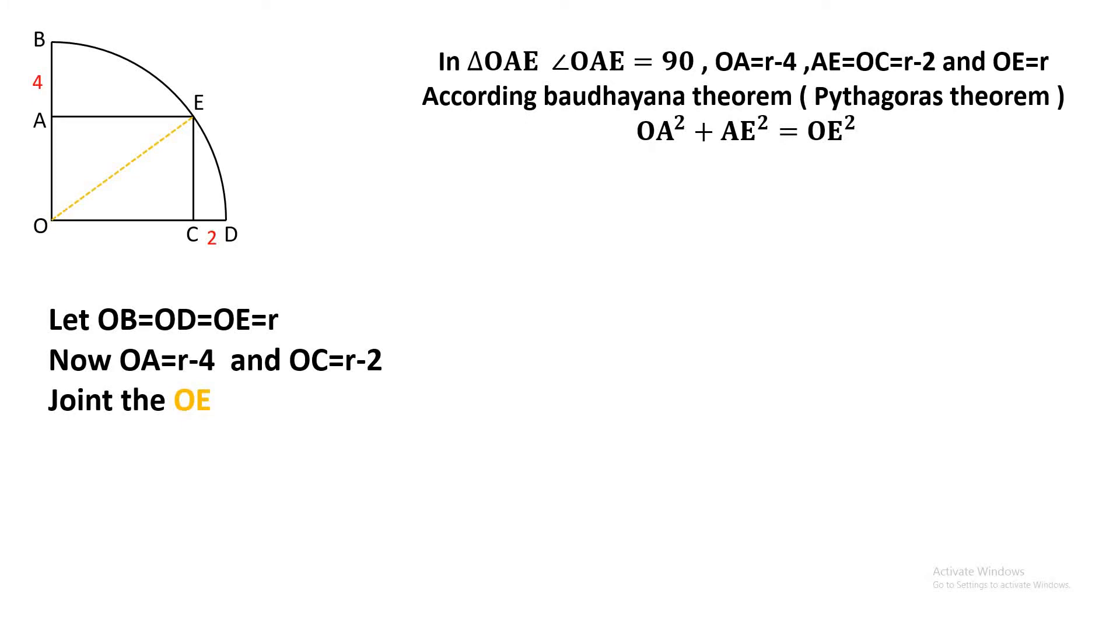Put the values of OA, OE, and AE and we get (r-4)² + (r-2)² = r². After expansion, we get r² - 8r + 16 plus r² - 4r + 4 equals r².